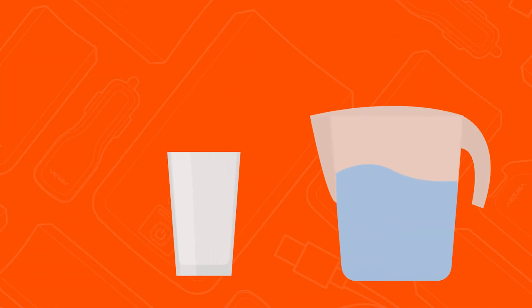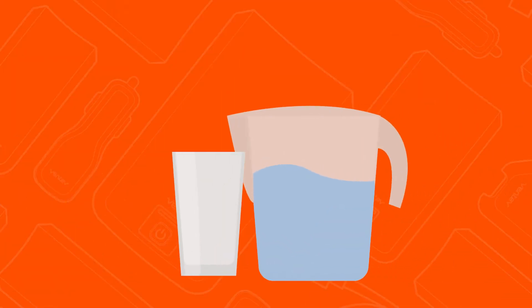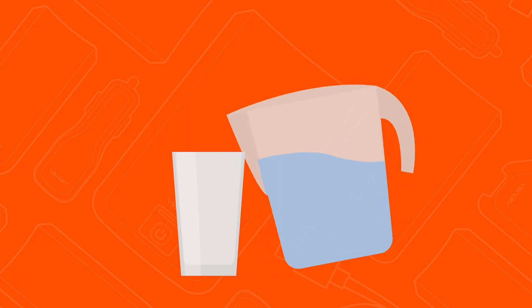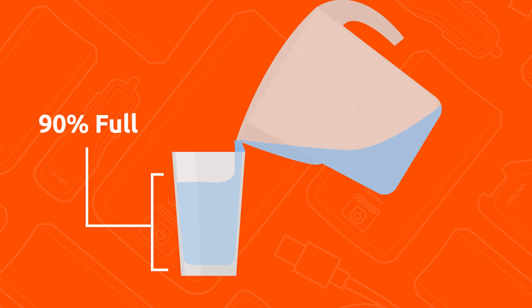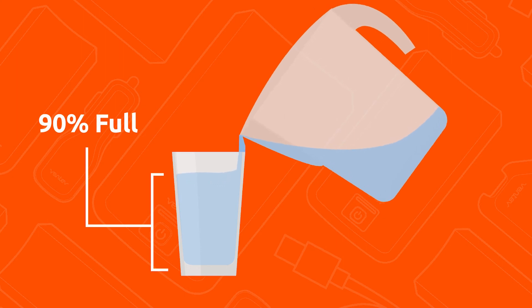Think of charging a battery as pouring a glass of water. As you pour the glass of water out of a pitcher, you tend to pour the water at its maximum rate until you can eyeball the glass as being roughly 90% full. To fill the last 10% of the glass, you typically slow your pour to ensure that you don't overfill the glass and make a mess.